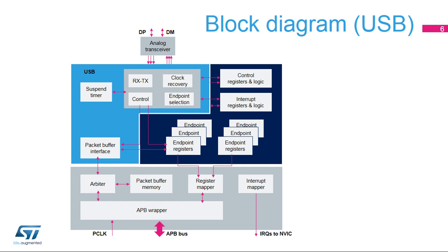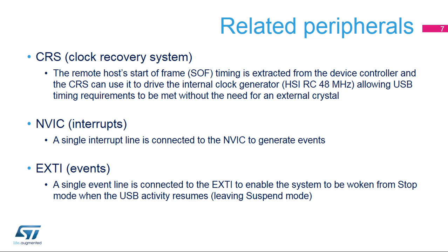The USB interrupt goes to the Cortex processor to signal various USB events. The AHB peripheral bus, or APB, enables read-write access of the controller. Other key elements are the packet buffer memory and the suspend driver, allowing low-power operation. Several related peripherals work in conjunction with the USB device controller to link the USB activity to the system power mode and the requirements of the software.